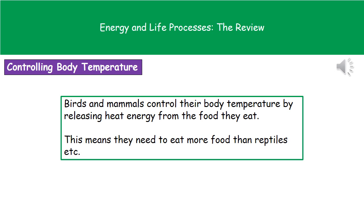The last area is controlling body temperature. When we think about warm-blooded animals — things like birds and mammals — we need to control our body temperature by releasing heat energy from the food we eat. That's what keeps us nice and warm. This means we need to take in more food to generate that energy than organisms that don't do this, like reptiles. So controlling body temperature is one of the main ways we use a significant amount of energy.